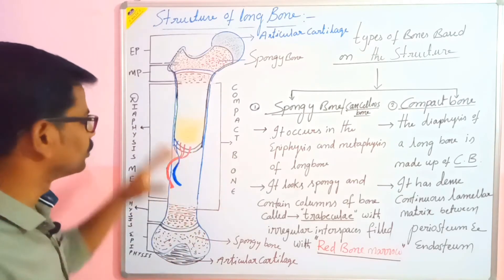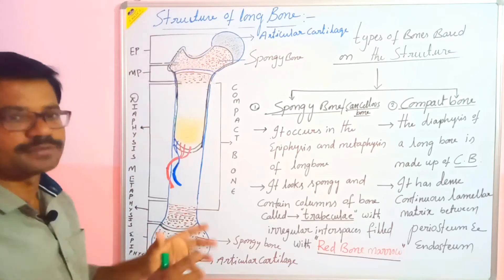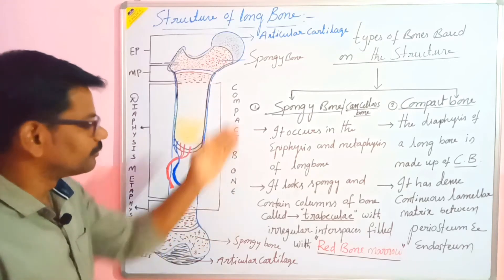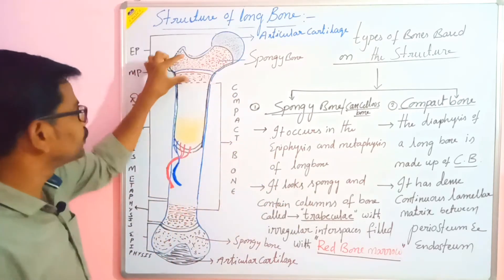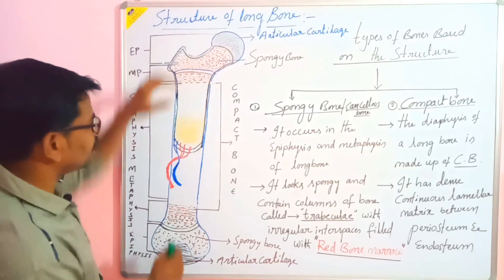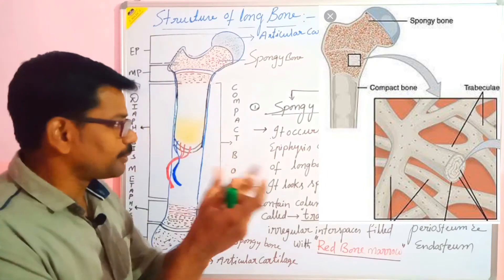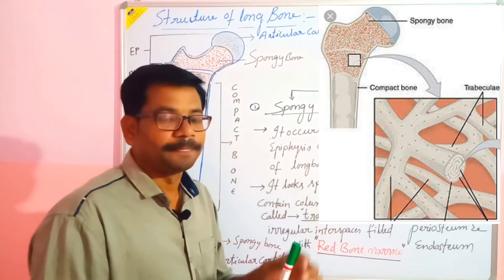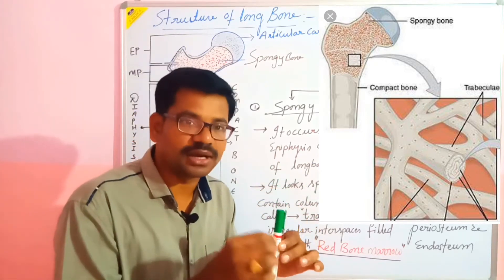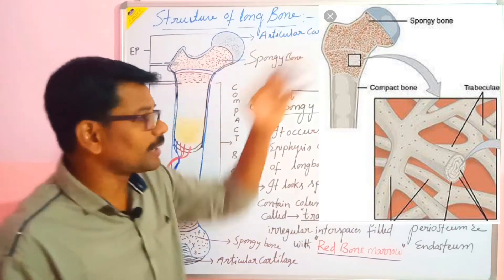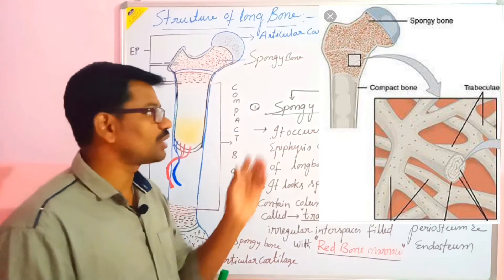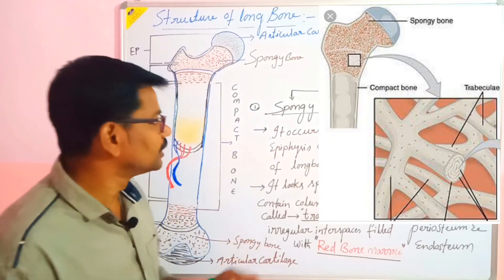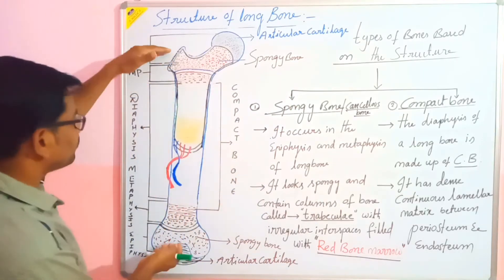It is called spongy bone because if you see the ends of the long bone, it has a somewhat spongy nature. It is called trabecular because if you observe this area of the spongy bone — that is, the ends of the long bone — the trabeculae are arranged in an irregular form. Trabeculae look like beam-like or pole-like structures. Between the trabeculae, a specialized marrow cavity is present called red bone marrow, which is responsible for production of blood.